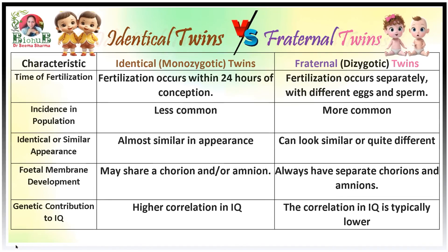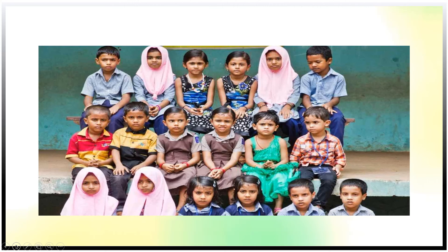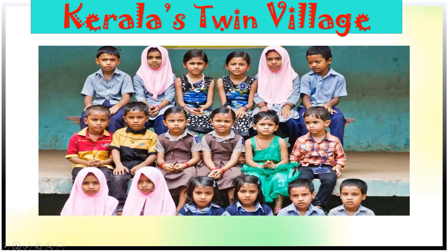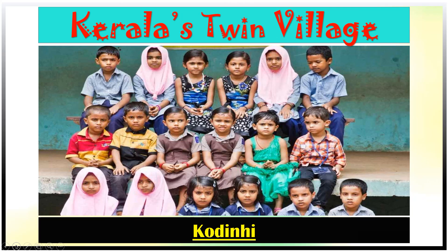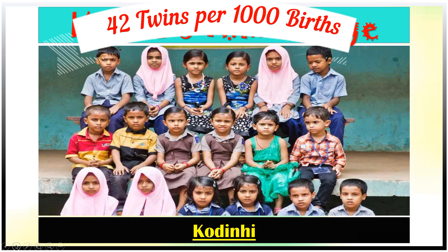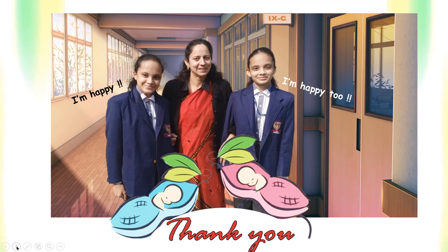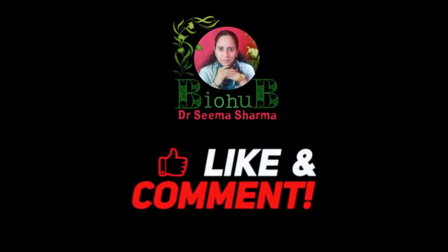Here is the tabulated account of all 12 points of differences discussed between the two types of twins. Now you should be able to identify which twins are monozygotic and which are dizygotic. As a fun fact, all the twins in this picture belong to the Twin Village of Kerala in Malappuram district — a village called Kodani — where the incidence of twins is 42 per 1,000 births. Thank you so much for watching and supporting BioHub. Take care, bye bye.